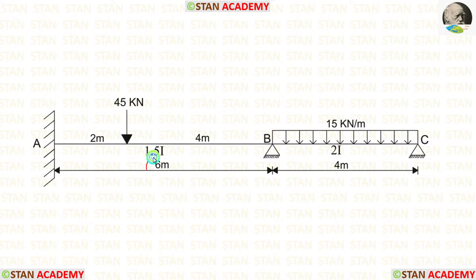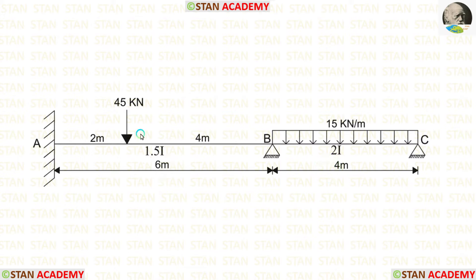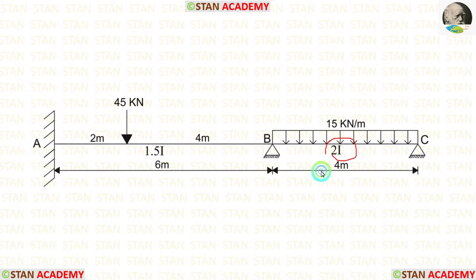Span AB is 6 m long and span BC is 4 m long. The moment of inertia for span AB is 1.5I, and for span BC, the moment of inertia is 2I.